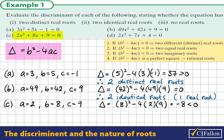Since this is less than 0, it means that in the quadratic formula we would have the square root of negative 8. The square root of negative 8 is not a real number — it's an imaginary number. Therefore, we don't have real roots, but we would have two imaginary roots in the quadratic formula.